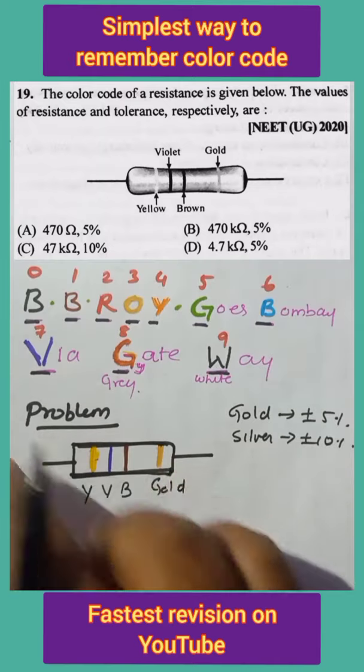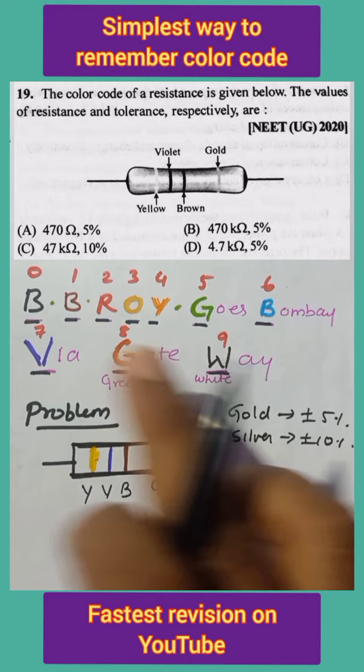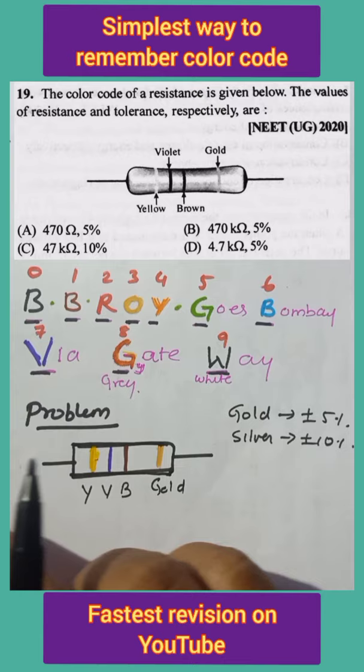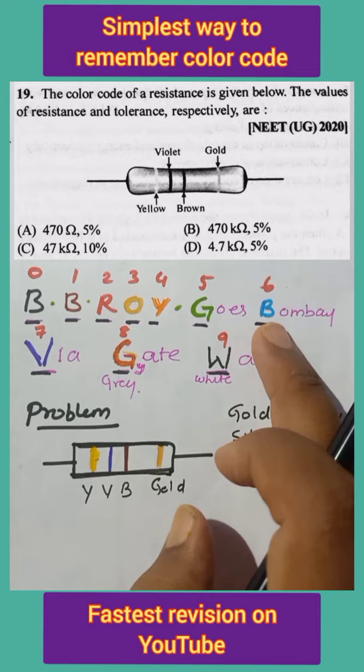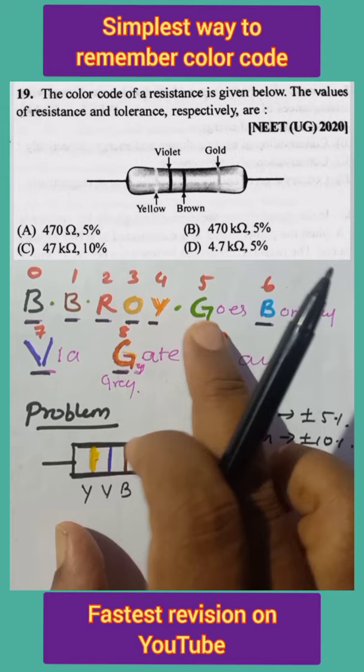A wonderful shortcut to remember the resistor color code is 'BB Roy goes Bombay via gateway': Black, Brown, Red, Orange, Yellow, Green, Blue, Violet, Gray, and White. Black is the darkest color, Brown is a little lighter, then Blue, which is further light. To avoid confusion, Green is beside Yellow, and Gray is beside White.